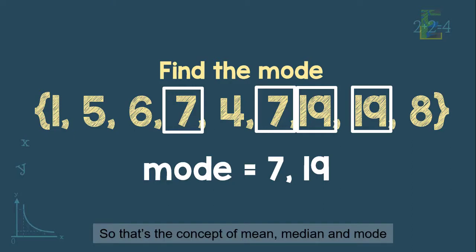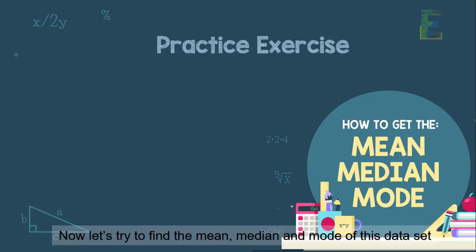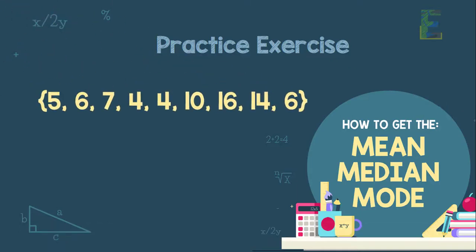So that's the concept of mean, median, and mode. Now let's try to find the mean, median, and mode of this data set: 5, 6, 7, 4, 4, 10, 16, 14, 6.